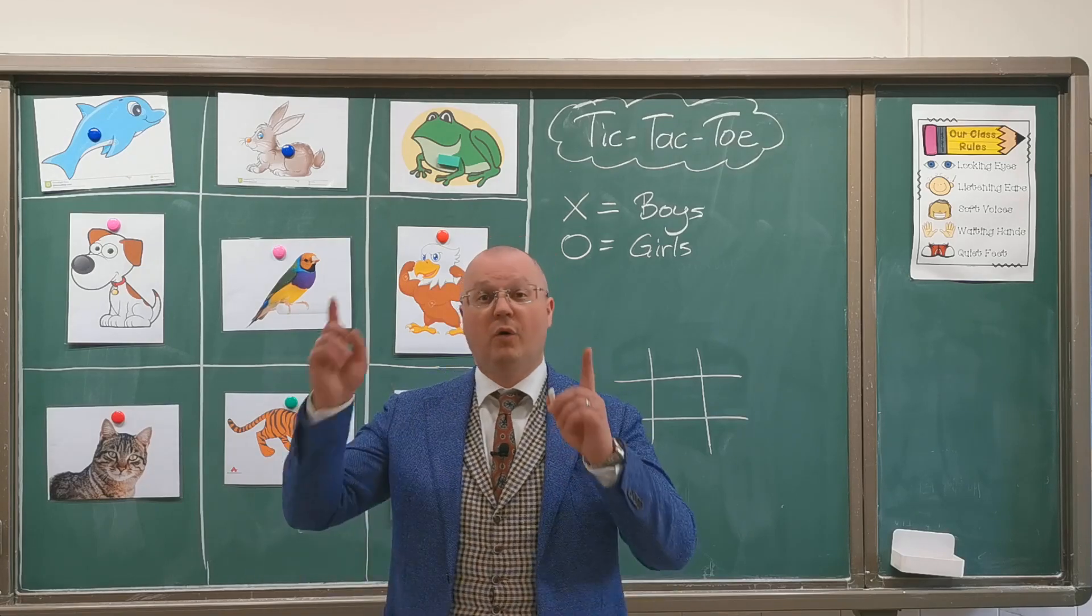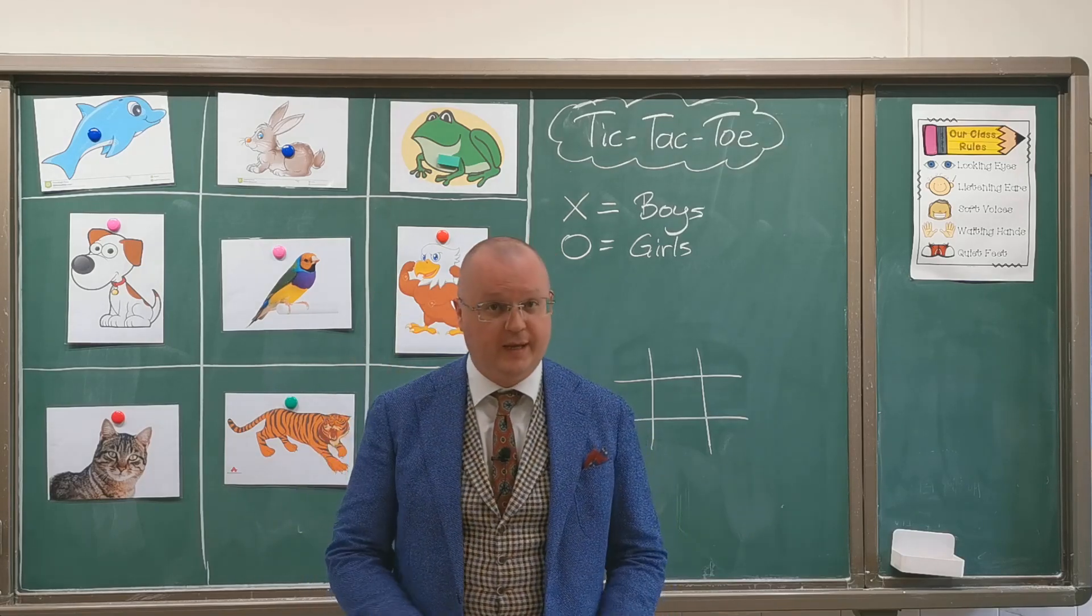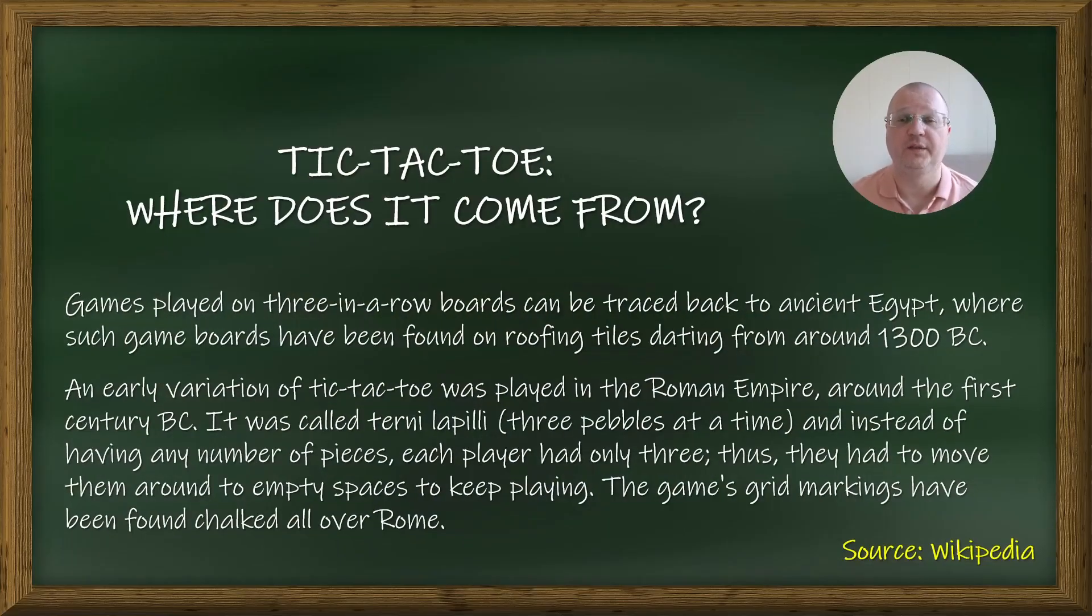So where does it come from? Games played on three in a row boards can be traced back to ancient Egypt, where such game boards have been found on roofing tiles dating from around 1300 BC.